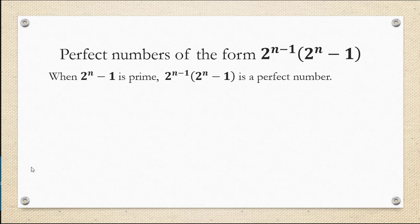An interesting fact about perfect numbers is that many of them take on the form 2 to the power of n minus 1 multiplied by 2 to the power of n minus 1. In fact, when 2 to the power of n minus 1 is prime, the product is a perfect number every time.